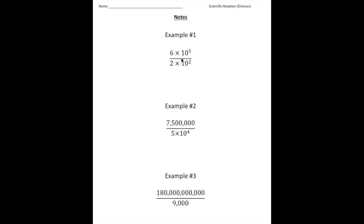We have 6 times 10 to the 5th divided by 2 times 10 squared. The way you do this is you take the 6 and the 2, and you say 6 divided by 2 is 3 times,